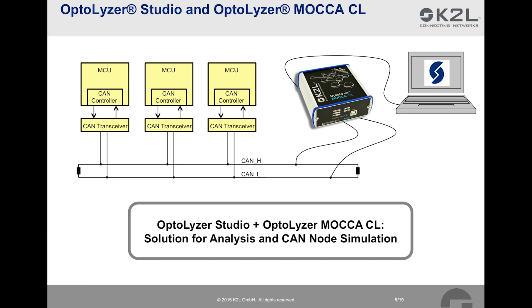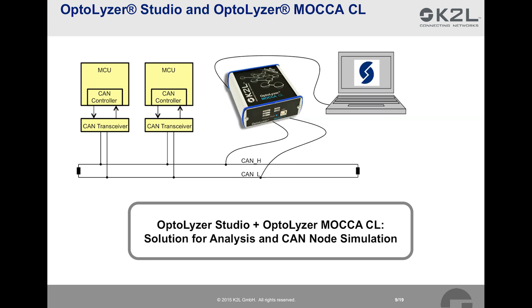Before we come to the example, a quick introduction into the development tools we will apply, Optalyzer Studio and Optalyzer Mocha CL. The Optalyzer Mocha CL is a hardware interface that addresses specifically CAN and LIN developments. It offers 6 CAN interfaces and 6 LIN interfaces. The Optalyzer Studio, in turn, is development software running on the PC. The picture indicates the combination of Optalyzer Studio and Optalyzer Mocha CL for analysis of what is going on on the bus. The Mocha CL interfaces directly to the CAN bus. On the other side, it is connected via USB to the notebook that is running Optalyzer Studio. The second use case goes beyond pure analysis. Here, a CAN node is replaced or simulated by Optalyzer Mocha CL and Optalyzer Studio. We will see both use cases in a second.